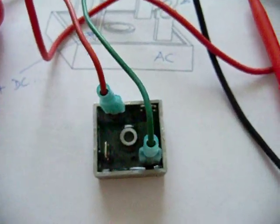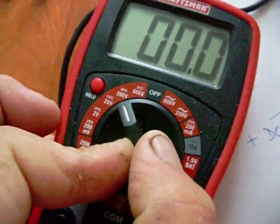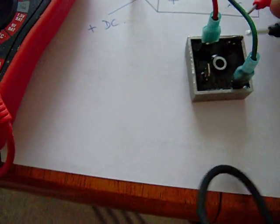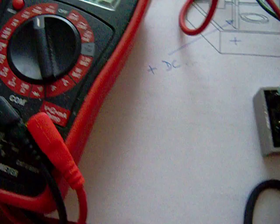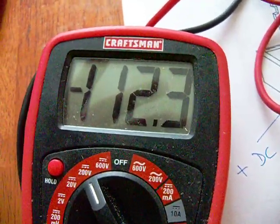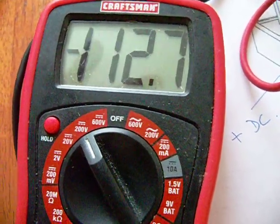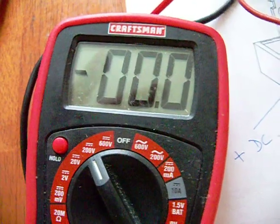And now let's turn it to the DC setting and we'll test the opposite legs. We have 112 volts out DC. That is DC, pure and simple.